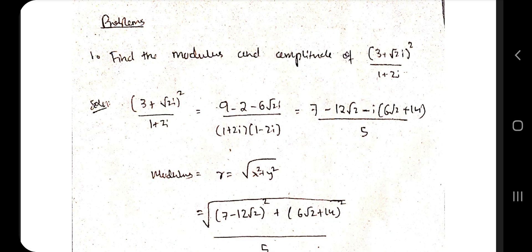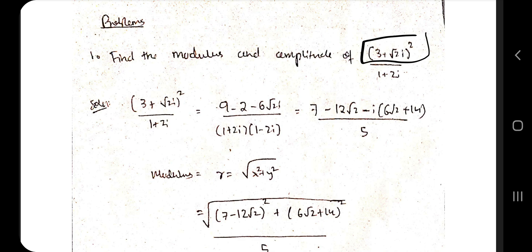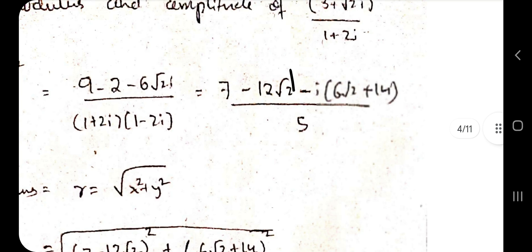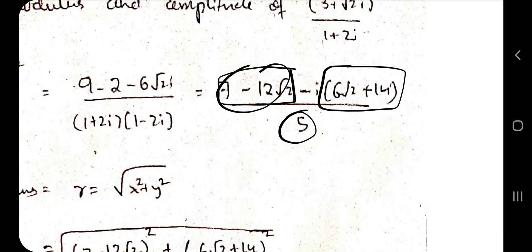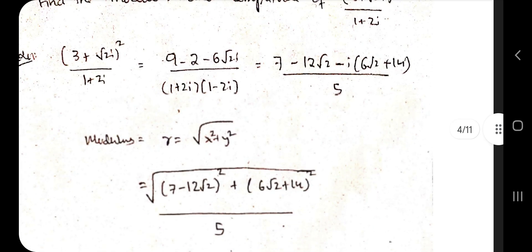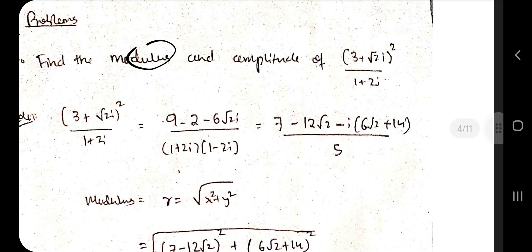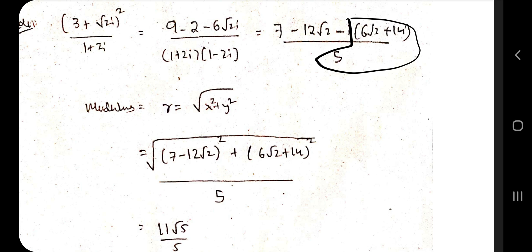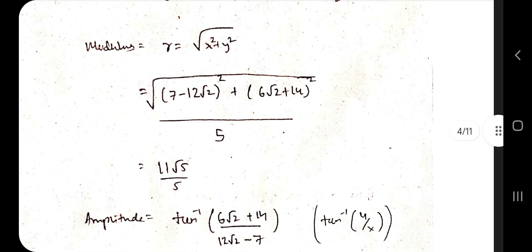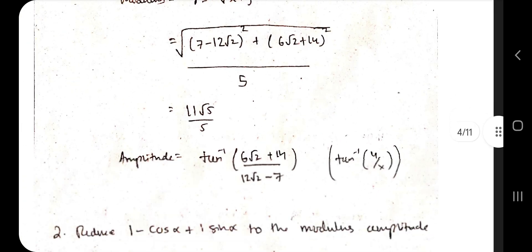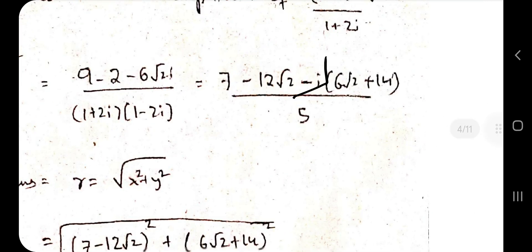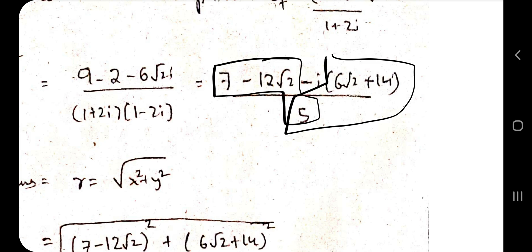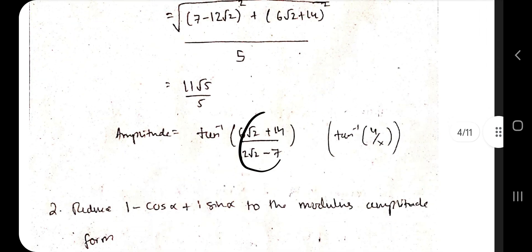For the modulus and amplitude problem type, you're given a function with a square to expand. Expanding gives a real term and an imaginary term, both with denominator 5. To find the modulus, apply the formula √(x² + y²), squaring x and y and taking the root, which gives 11√5 / 5. The amplitude is tan⁻¹(y/x); the 5s cancel from numerator and denominator leaving the tan inverse of the remaining terms.